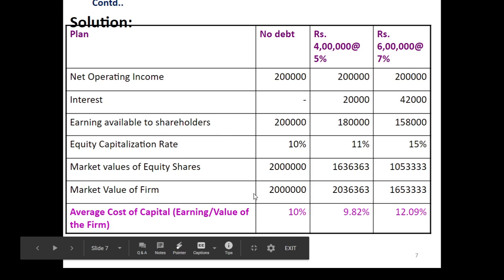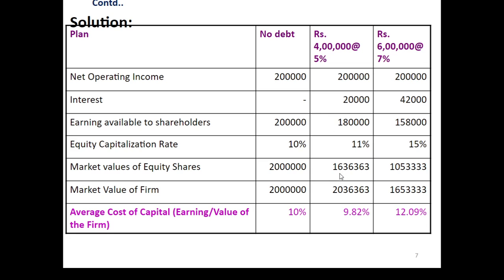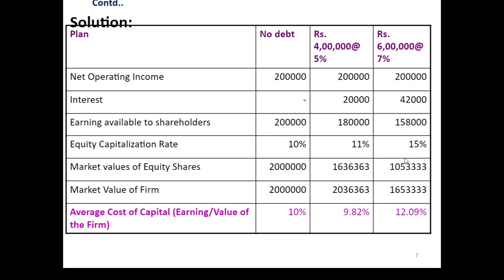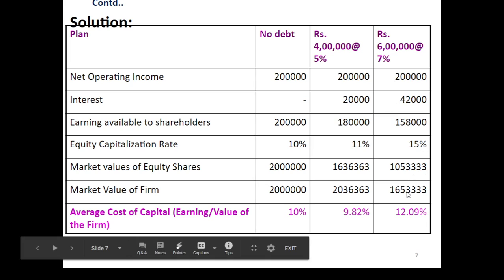The market value of the firm is equity and debt together. In Case 1, total is 20 lakh rupees (all equity). In Case 2, equity is 16,36,363 and debt is 4 lakh rupees, giving a total of 20,36,363. In Case 3, equity is 10,53,333 and debt is 6 lakh rupees, giving a total of 16,53,333. The average cost of capital: in Case 1 it is 10%, in Case 2 it is 9.82%, and in Case 3 it is 12.09%.